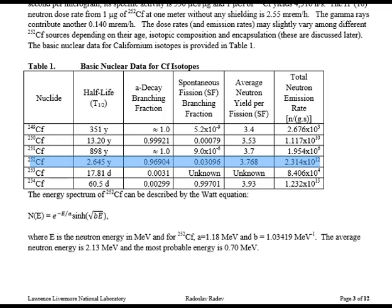So this might actually be somewhat useful. Spontaneous fission branching fraction 0.03096. You're going to want to write that down if you want to solve this the long way. Average neutron yield per fission using spontaneous fission 3.768. Write that down too if you want to do it the long way. Total neutron emission rate 2.314 times 10 to the 12 neutron per gram per second.